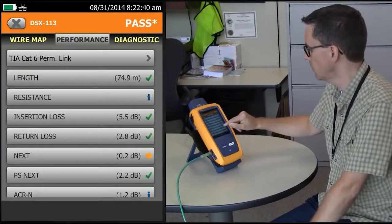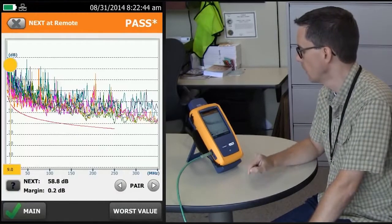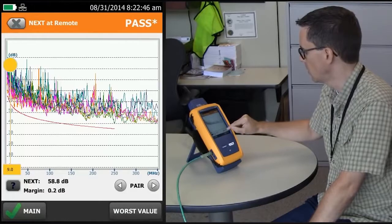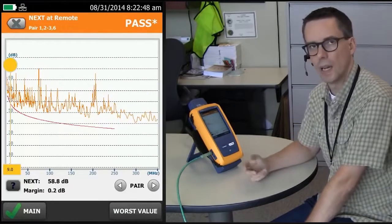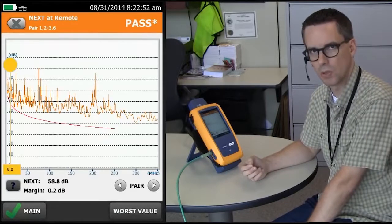So, crosstalk is marginal within the accuracy of the instrument. Let's tap on Next, and we'll tap here, and that will take us to the worst performing pair for near-end crosstalk.